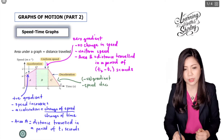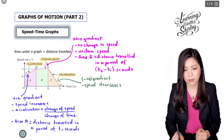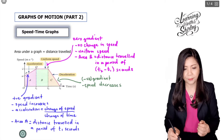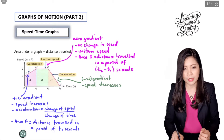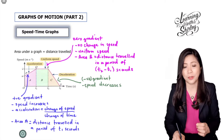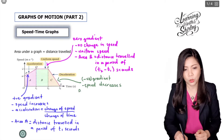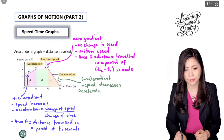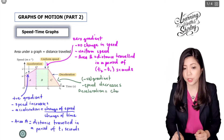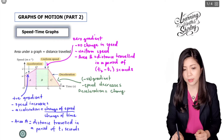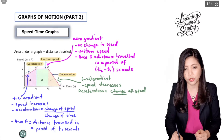Speed decreases — that's deceleration. The formula for deceleration is the change of speed over the change of time.